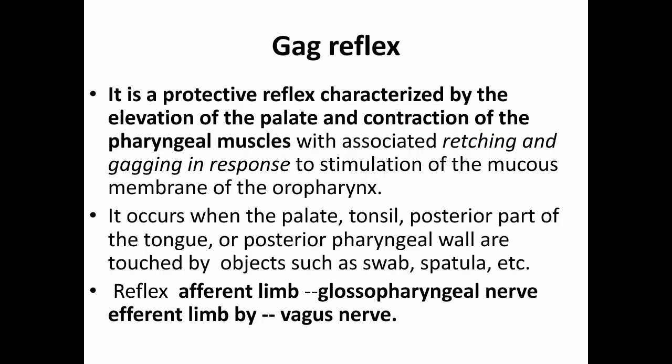The gag reflex is a protective reflex. When the palate, tonsil, or posterior pharyngeal wall is touched by a swab or spatula, there is reflex contraction of the palate and pharyngeal muscles due to stimulation of the mucous membrane of the oropharynx. The afferent limb is formed by the 9th nerve (glossopharyngeal) and the efferent limb by the 10th nerve (vagus). This elevation of the palate and contraction of pharyngeal muscles, associated with retching and gagging, is the gag reflex. That is all about the soft palate.